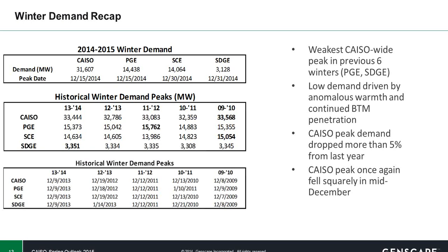This low demand period was also amplified by continued build-out in behind-the-meter solar generation, which seems to be impacting load growth seen not just in the winter, but throughout other portions of the year. As far as the timing of the demand peak this year, it fell in line with what we're accustomed to seeing, which is a mid to early December demand peak.